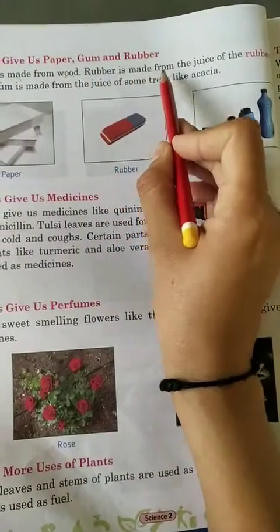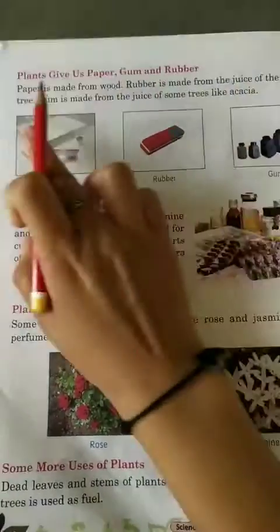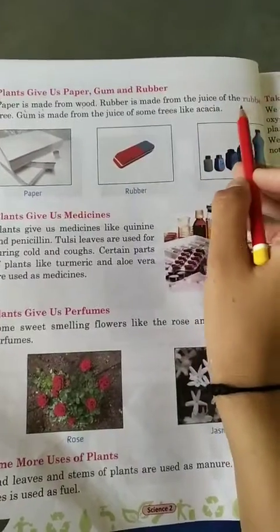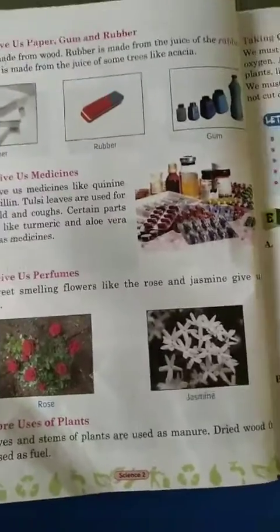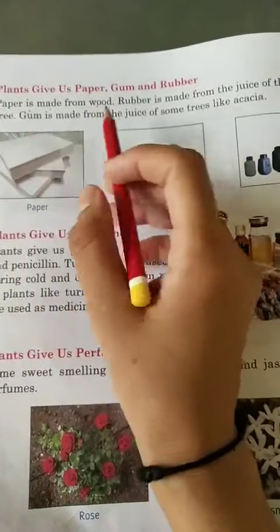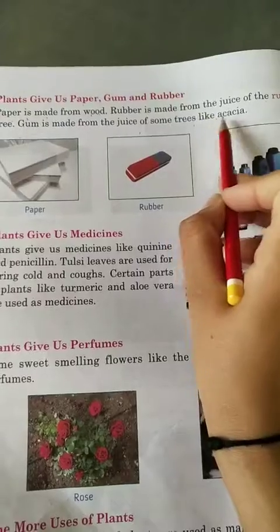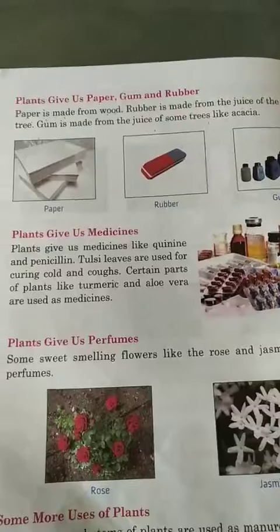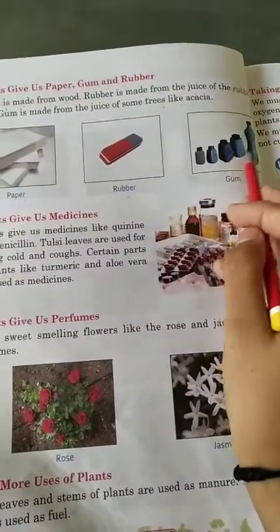Rubber is made from the juice of the rubber tree. Rubber is made from the juice of some trees, like acacia. Acacia means 'babul'. Paper means 'kaagas', rubber and gum.